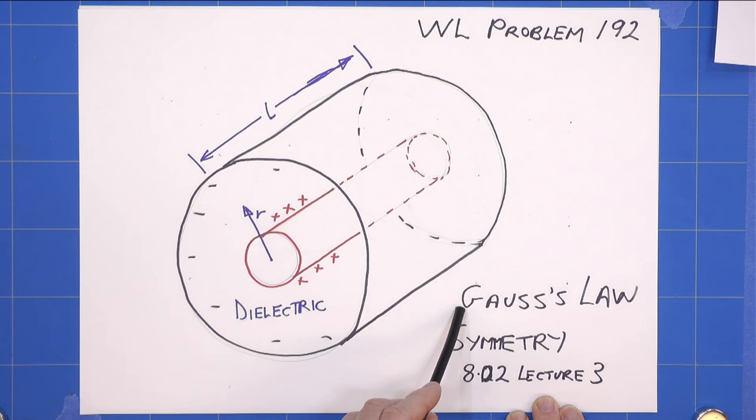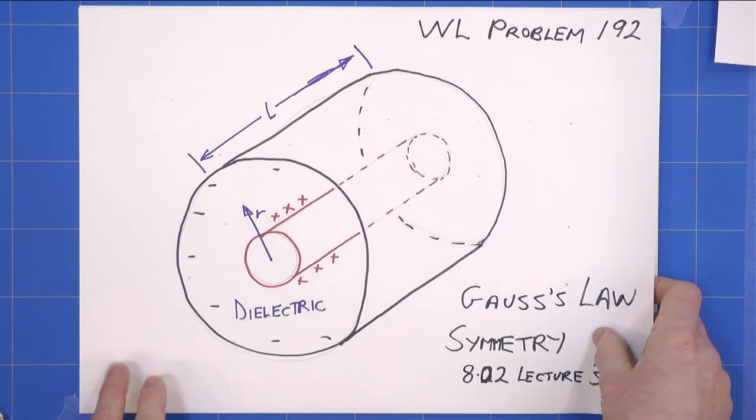We're going to need to use Gauss's law to solve this problem and we make extensive use of symmetry. Without symmetry we can't do the problem. You can learn all about symmetry in lecture 3 of 802 on Walter Lewin's site.